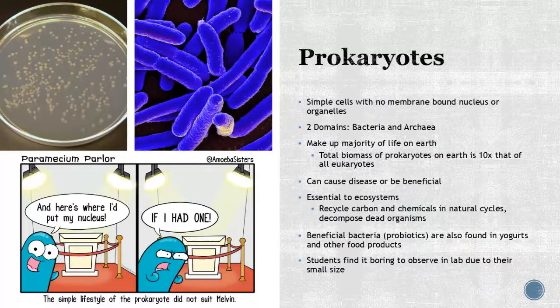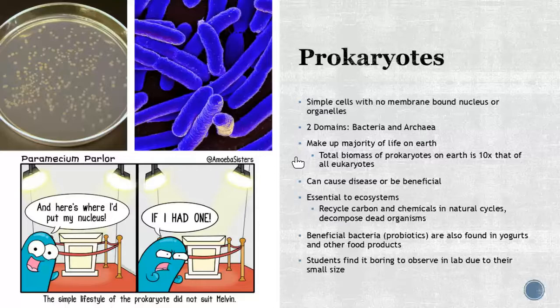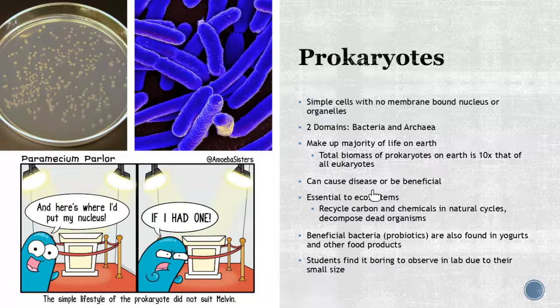Prokaryotes are your very simple cells — I call them the efficiency apartment — just the basics to survive in a single cell. The key feature is there's no membrane-bound nucleus or organelles, but they have those four key components. There are two big domains — bacteria and archaea — that are prokaryotes, and they make up a majority of life on Earth. If you took the total biomass of all prokaryotes, it's ten times that of all eukaryotes. Not all of them are good; some cause diseases, but some are beneficial.